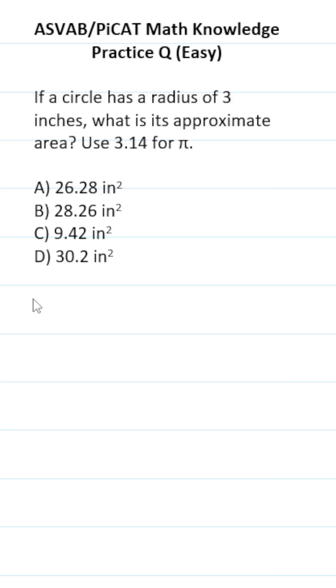This easy ASVAB PiCAT Math Knowledge Practice Test question says, if a circle has a radius of 3 inches, what is its approximate area? Use 3.14 for pi.